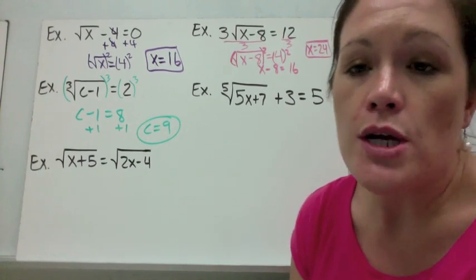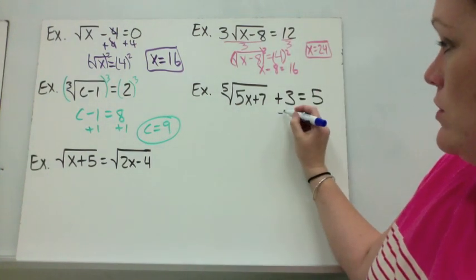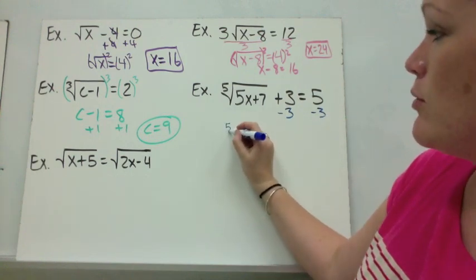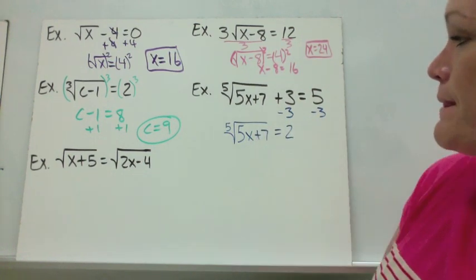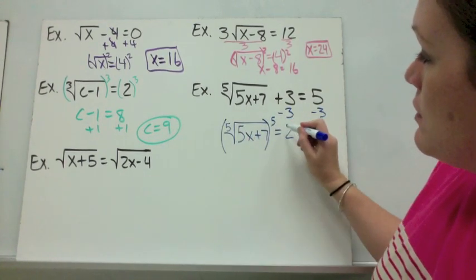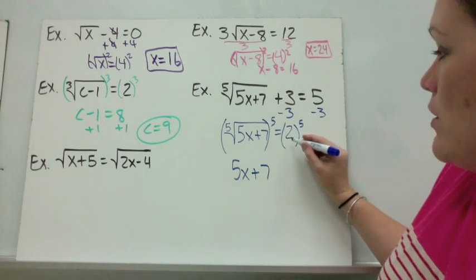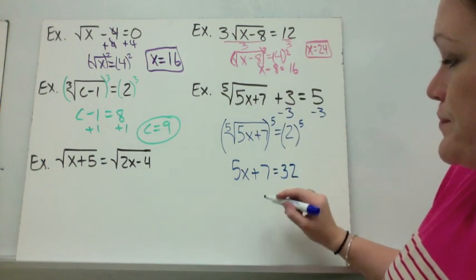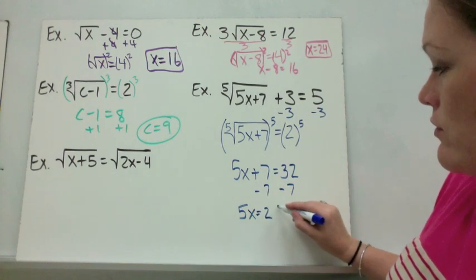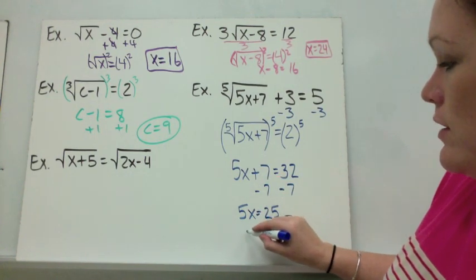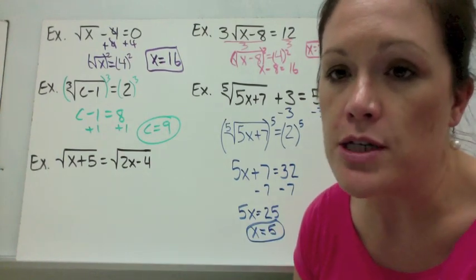Example 4 has a fifth root — I want to show you different roots so you'll know how to eliminate them no matter what power you're given. First, get it by itself by subtracting 3, leaving the fifth root of (5x + 7) equals 2. Take both sides to the fifth power; the fifth root and fifth power cancel, leaving 5x + 7 = 32. Subtract 7 to get 5x = 25, then divide by 5: x equals 5. You can plug that back in to verify.